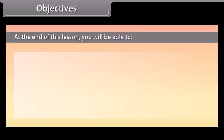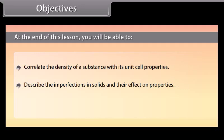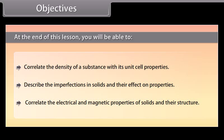Objectives: At the end of this lesson you will be able to correlate the density of a substance with its unit cell properties, describe the imperfections in solids and their effect on properties, and correlate the electrical and magnetic properties of solids and their structure.